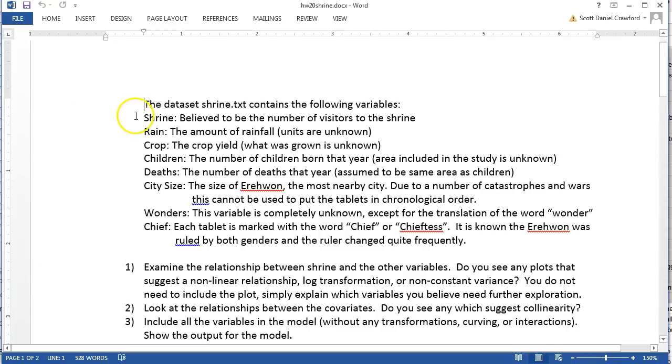We want to try to predict how many people will visit some mysterious shrine and we have a whole bunch of variables about the year in which the number of visitors was recorded. This looks like a time series problem which is beyond what we've done in this class, so we're saying that these are all mixed up years so that we can't try to analyze the time component.